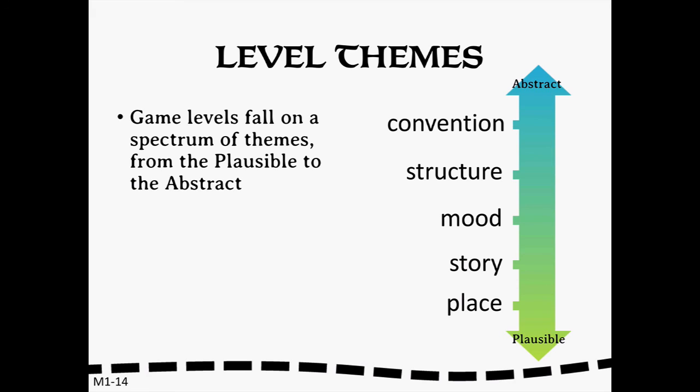Any discussion of storytelling in level design brings us to the concept of level themes. Through the evolution of interactive media, level designers have solved a number of common problems, and level themes are a kind of shorthand for particular common solutions. As you can see from this diagram, the content in game levels falls on a continuum — anywhere from the plausible, where the space makes sense according to reality or its own internal logic, all the way to the abstract, where the game setting is completely arbitrary. Some levels are dedicated to just one spot on the spectrum, but many levels feature content that falls into two or even more themes. In a later module, we'll discuss the various themes and learn what they're commonly used to achieve.